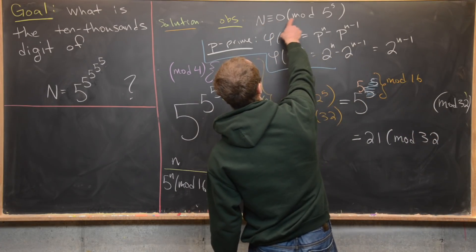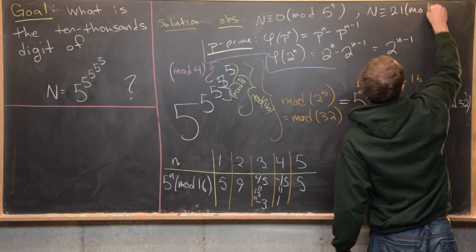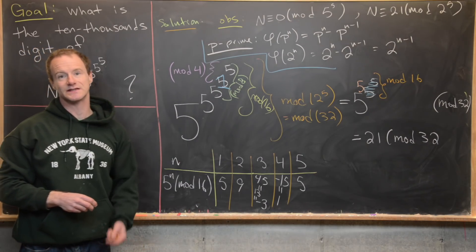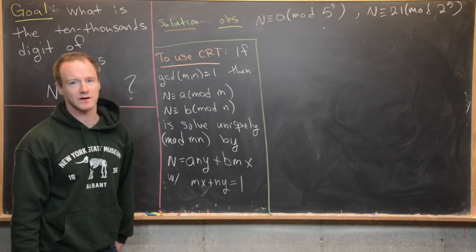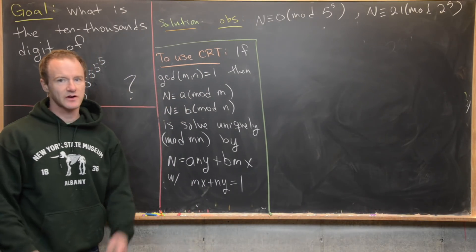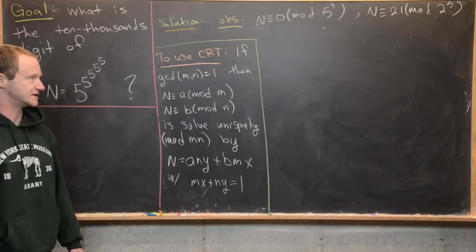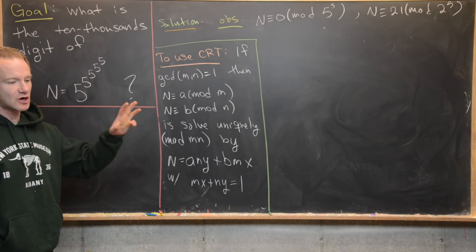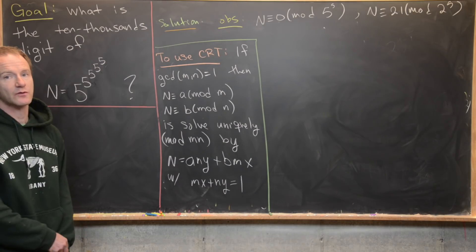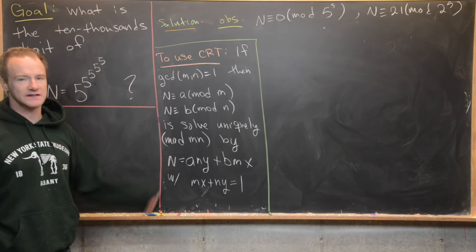So we have N congruent to zero mod five to the five, and N congruent to 21 mod two to the five. We'll use the Chinese remainder theorem to find N. On the last board we determined that N was congruent to zero mod five to the five — that was easy to see — and by calculations involving Euler's theorem, it's congruent to 21 mod 32. Now we want to solve the system of linear congruences defined by those two equations using the Chinese remainder theorem.